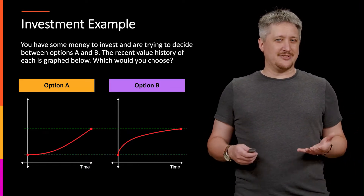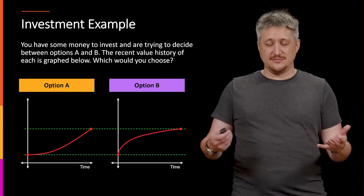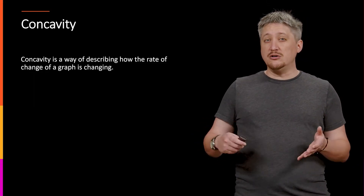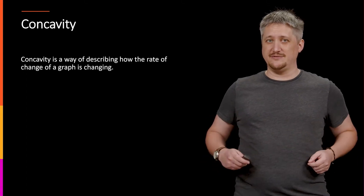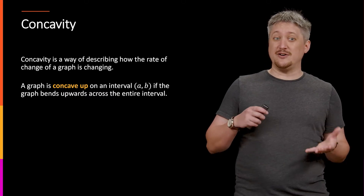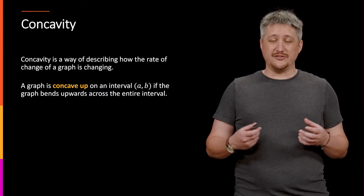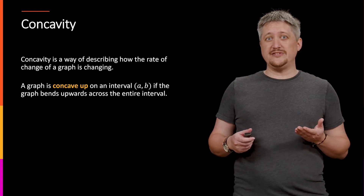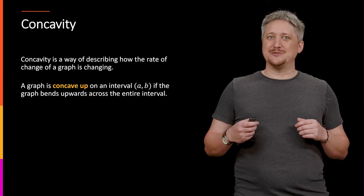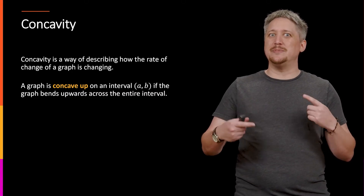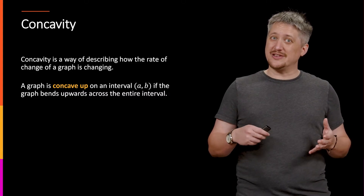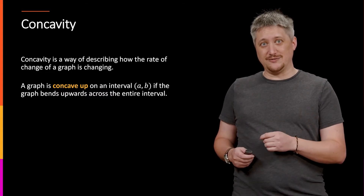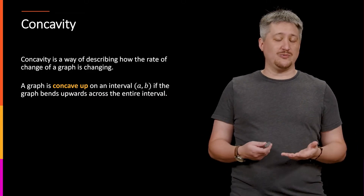But how do we capture that mathematically? That's the question. This is where concavity comes in. Concavity is a way of describing the rate of change of the actual change of a graph. We look at this as concave up and concave down. A graph is concave up on some interval if the graph bends upward across that entire interval — not just increasing, but increasingly increasing. The rate of change is getting bigger and bigger as it goes. This is what graph A looked like: it was increasing, and the rate it was increasing was itself increasing. This is a situation where it would be concave up.